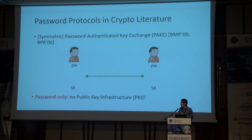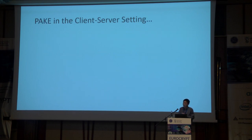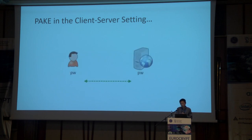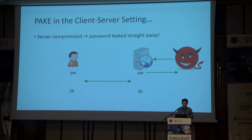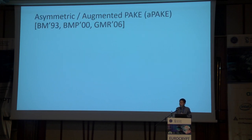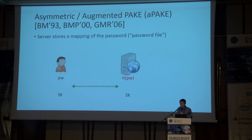Consider PAKE in a client-server setting. What if one party is a client and another is a server? What if an adversary breaks into or compromises the server? It is very clear that the adversary will learn the password straight away and all security guarantees are lost. So, how do we modify the PAKE protocol to be resilient to server compromise? This is the topic of asymmetric or augmented PAKE, or APAKE.